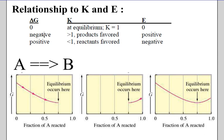If we have a negative delta G, that means we're producing products, so we're going to have a number greater than one for K. We're going to be favoring the production of products.